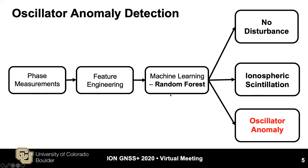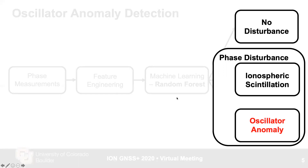The features are then input to the machine learning algorithm to conduct the detection task. Here, random forest is the machine learning algorithm we implemented. In the next few slides, I will first talk about the feature engineering, followed by the introduction of random forest. One thing I want to emphasize is that the commonality between scintillation and oscillator anomaly is that both are phase disturbances, which will be considered in feature engineering.